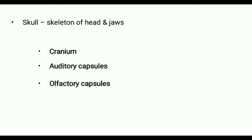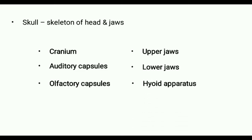Olfactory capsules enclose the olfactory receptors, which are the smelling organs. Other parts of the skull include the upper jaws, lower jaws, and hyoid apparatus. So the skull is the skeleton of head and jaws that includes cranium, auditory and olfactory capsules, upper and lower jaws, and the hyoid apparatus.